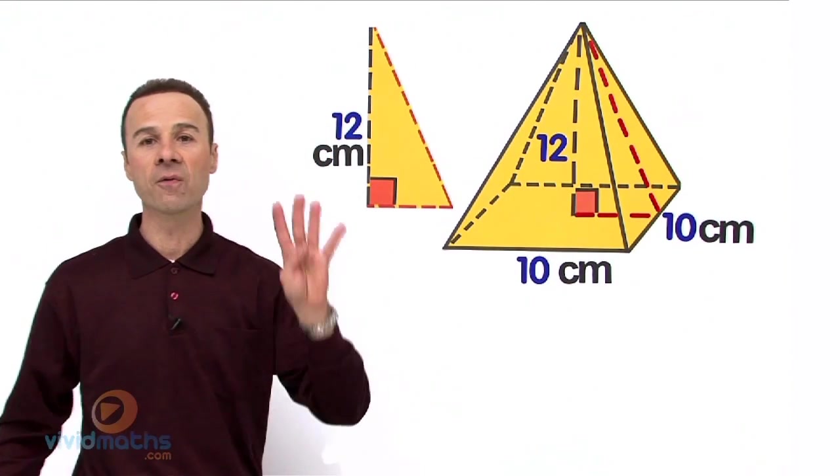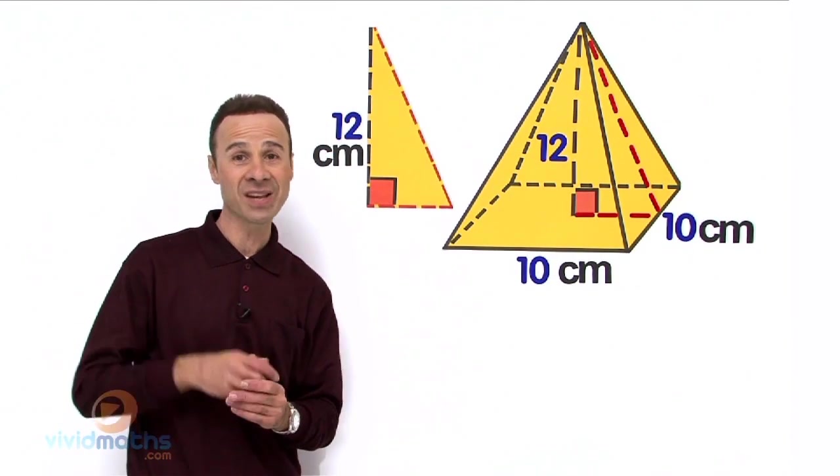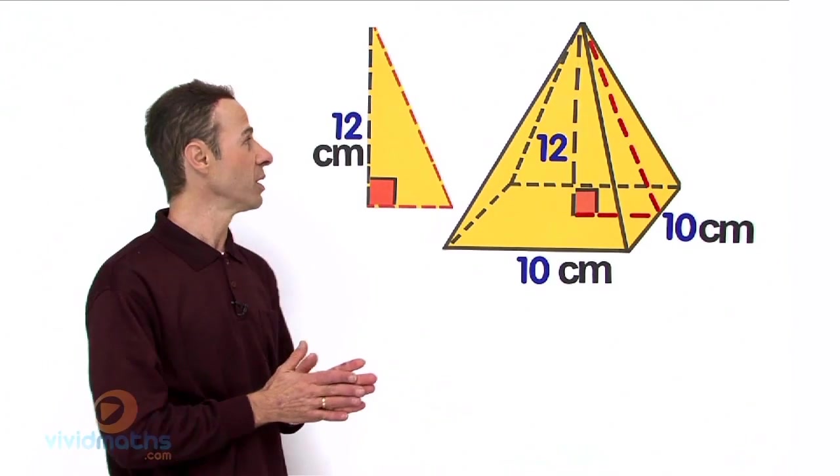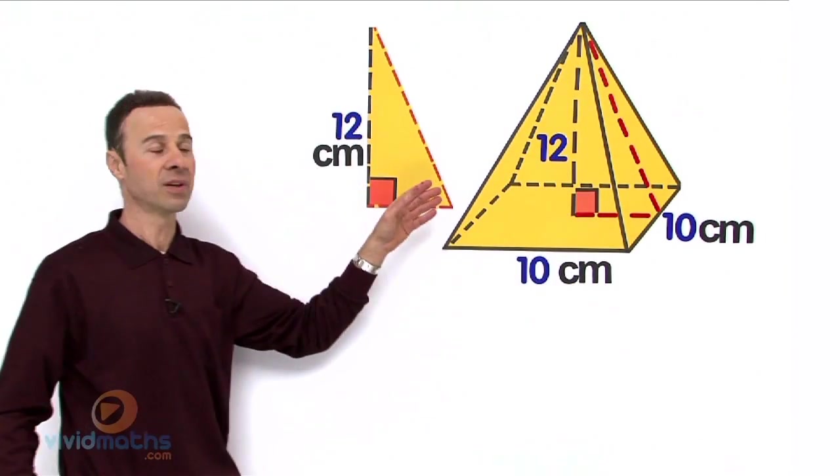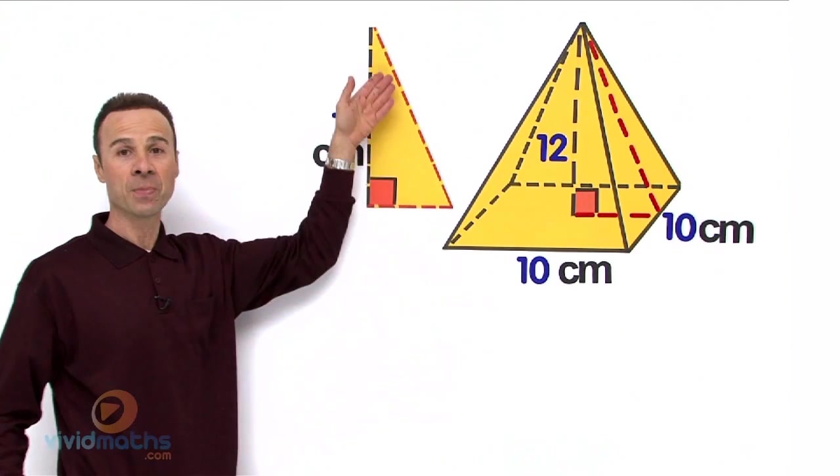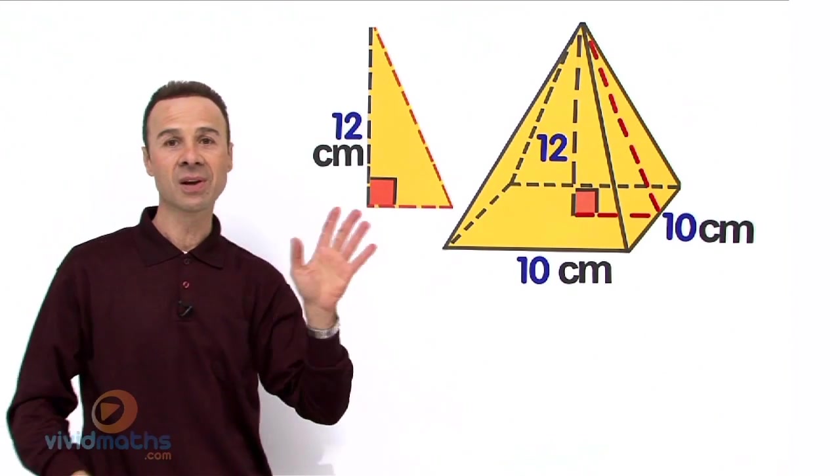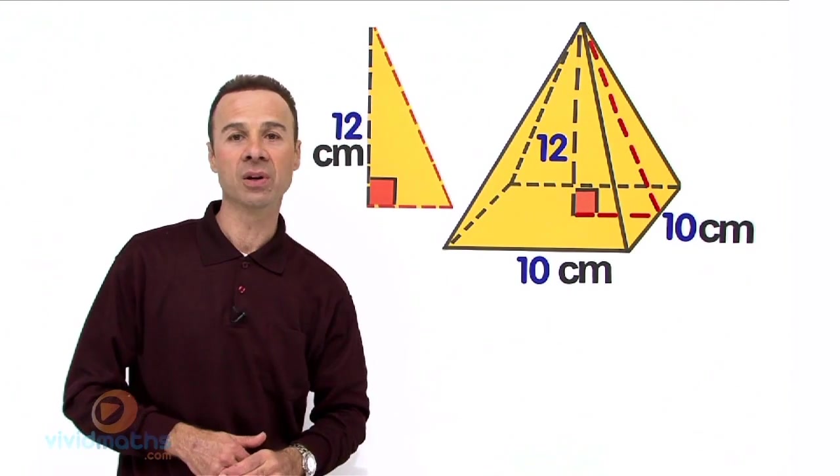Now we are going to take it in 4 steps. The first step, as I mentioned in part 1, is we need to find this slant height across there, and that is equivalent to this right over there. So that is what we are going to find.